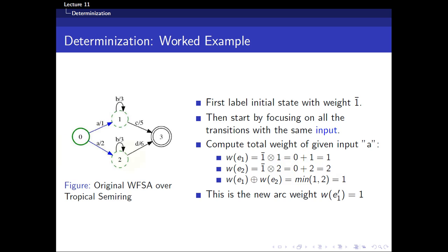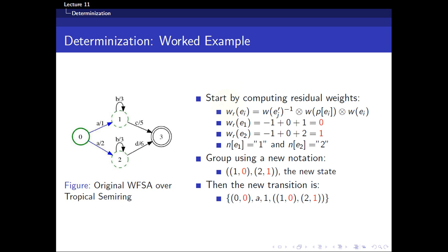After determining all transitions with input 'a', we add them up to find the new arc weight. In the tropical semi-ring, addition is defined as the minimum function, so 1 plus 2 equals 1 (the minimum of 1 and 2). The new arc weight is 1. This arc originates from state 0, has residual weight 0, input 'a', and weight 1. Now we need to find out where it ends up by computing the residual weight.